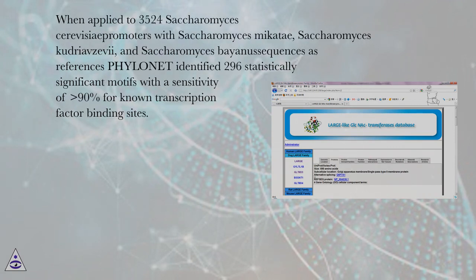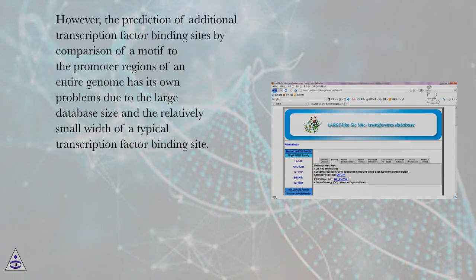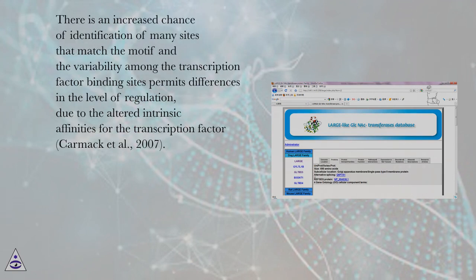When applied to 3,524 S. cerevisiae promoters with S. mikatae, S. kudriavzevii, and S. bayanus sequences as references, Footprinter identified 296 statistically significant motifs with a sensitivity of greater than 90% for known transcription factor-binding sites. The specificity of the predictions appears very high because most predicted gene clusters have additional supporting evidence, such as enrichment for a specific function, in vivo binding by a known TF, or similar expression patterns. However, prediction of additional transcription factor-binding sites by comparison of a motif to promoter regions of an entire genome has its own problems due to the large database size and the relatively small width of a typical transcription factor-binding site, and there is an increased chance of identifying many sites that match the motif. The variability among transcription factor-binding sites permits differences in the level of regulation due to altered intrinsic affinities for the transcription factor (Carmack et al., 2007).